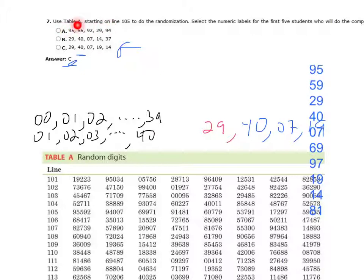Now, the first choice is out because there's only 40 people and they have a 95, a number 95, so that's dead. I'm going to look for numbers this way and we're supposed to start at line 105.